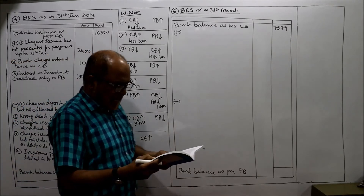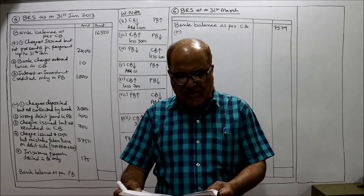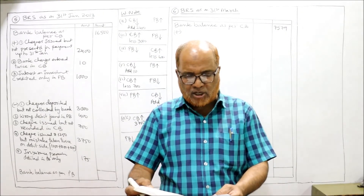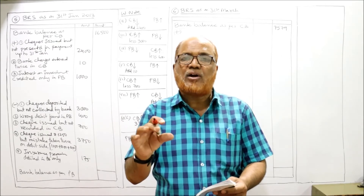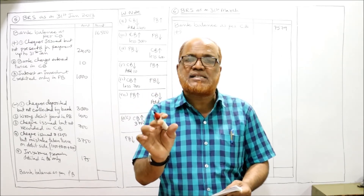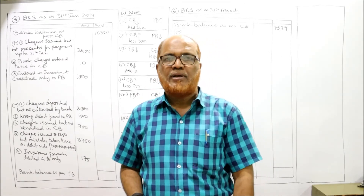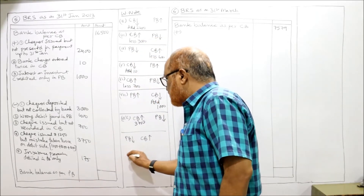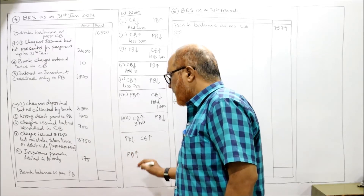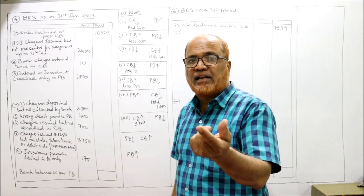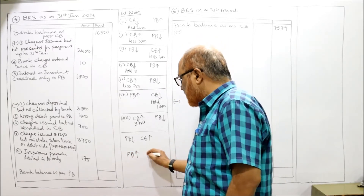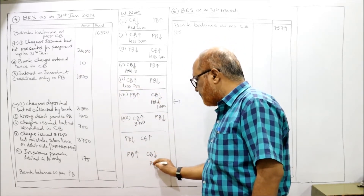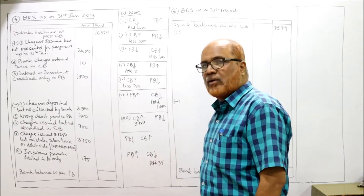Last item for Problem 5: there is a credit of rupees 35 as interest in the pass book for which no entry was found in the cash book. The pass book balance increases because of this credit. The cash book shows less balance. Our starting point, the cash book, shows less balance, so we add rupees 35.